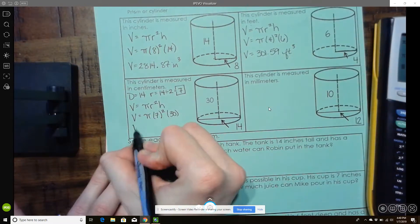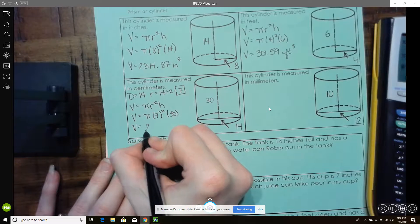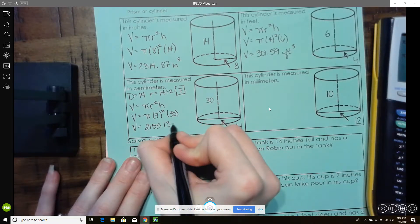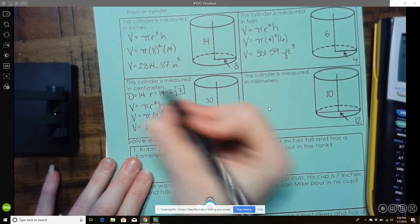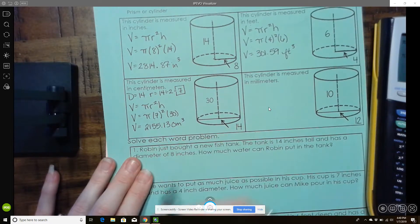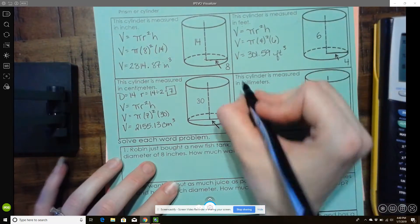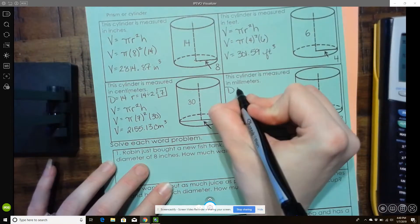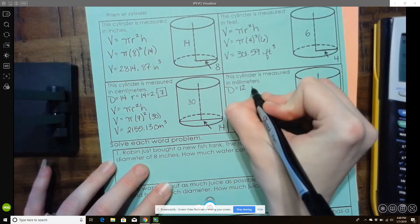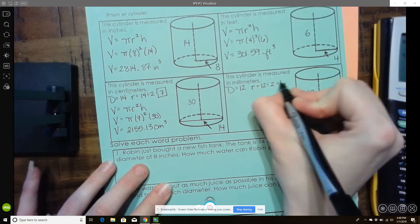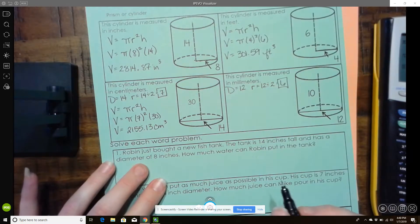So for this one, your volume is going to equal 2,155.13. This is centimeters cubed. All right, one more cylinder here. So again, they gave me the diameter. I need the radius. So I have to divide the diameter by 2. So my radius is 6.